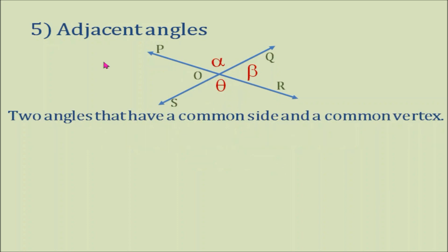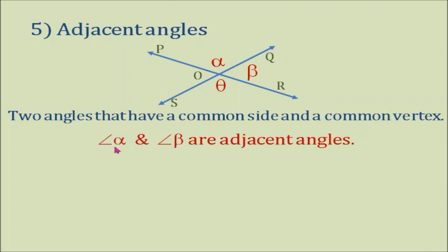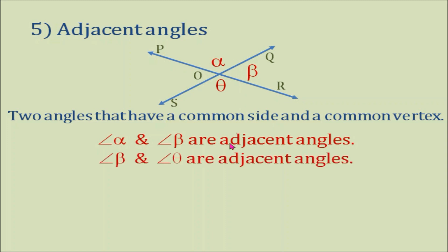Number 5: Adjacent angles. They are two angles that have a common side and a common vertex. So we have here two lines intersecting each other. Angle A and angle B are adjacent angles, and angle B and angle C are also adjacent angles.